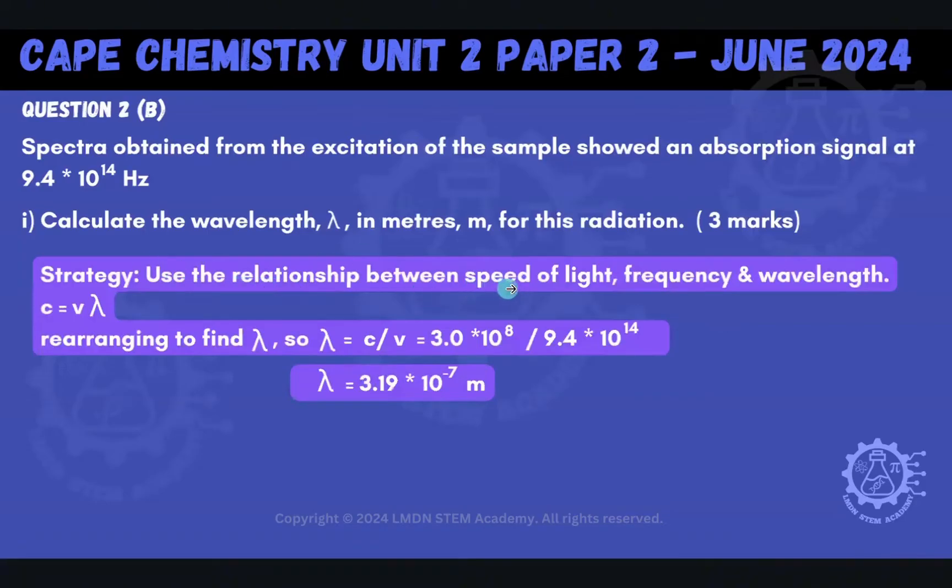We have to use the relationship between the speed of light, frequency, and wavelength because they gave us a frequency. We know the speed of light C is 3.0 times 10 to the 8 meters per second. So if we use this equation that C is equal to V, which is your frequency, times your lambda, which is your wavelength, then we can rearrange that, making lambda the subject. And so we'd end up with lambda being equal to the speed of light, C, over frequency. And when we plug that in, we end up with a lambda of 3.19 times 10 to the minus 7 meters.